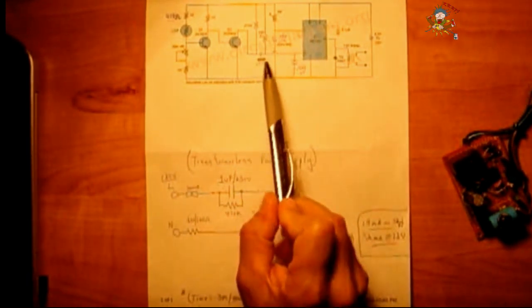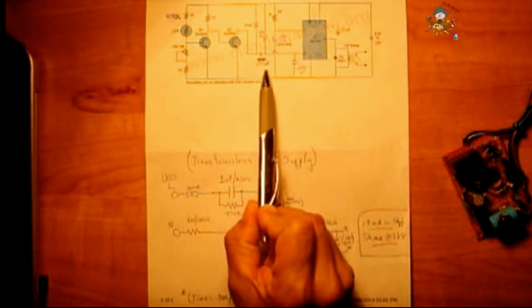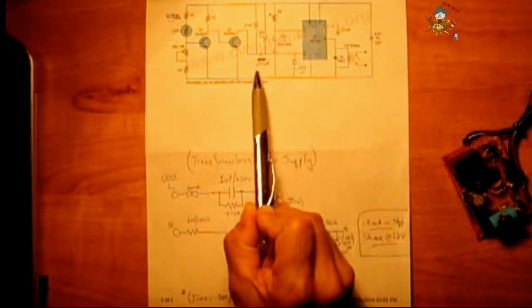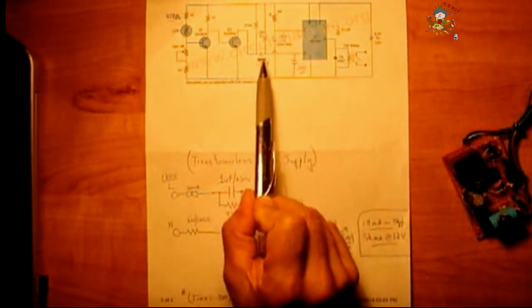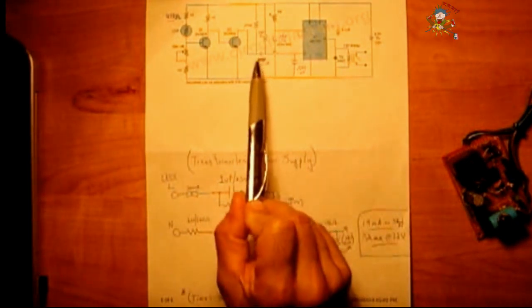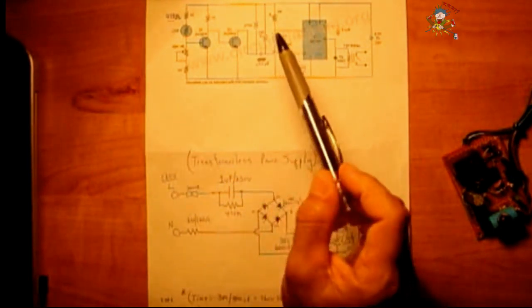There's a 220k before the 0.01 microfarad capacitor. This was a 104 cap, a 0.1 microfarad. I replaced it for better performance. You have a 220k before that and after it, you have a 270k heading up towards the positive rail.